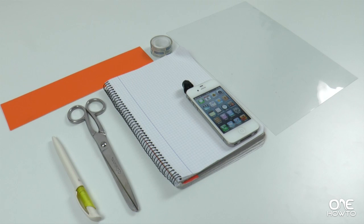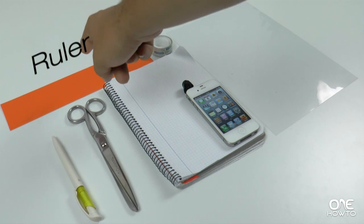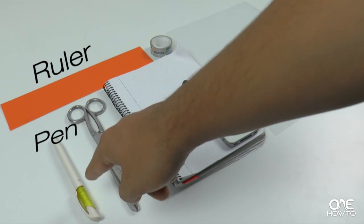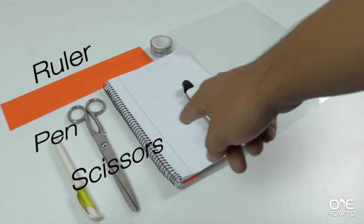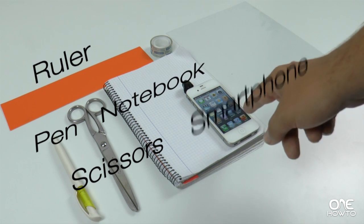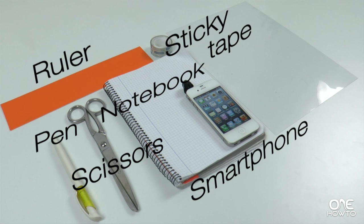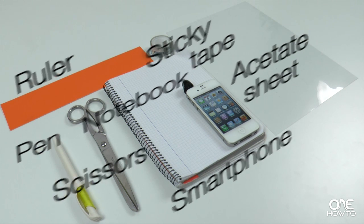In order to make this hologram you'll need the following items: a ruler, a pen, some scissors, a notebook, your smartphone, some sticky tape, and an acetate sheet, which is just a sheet of clear plastic.